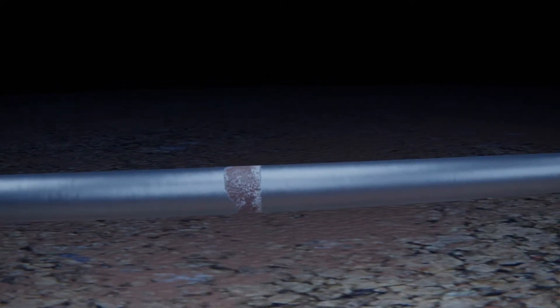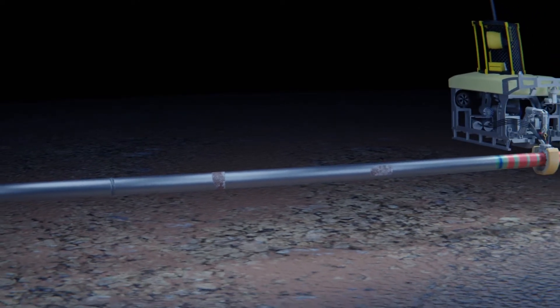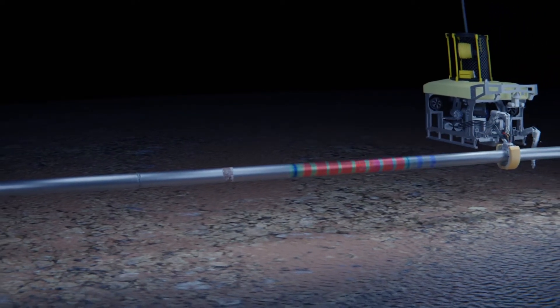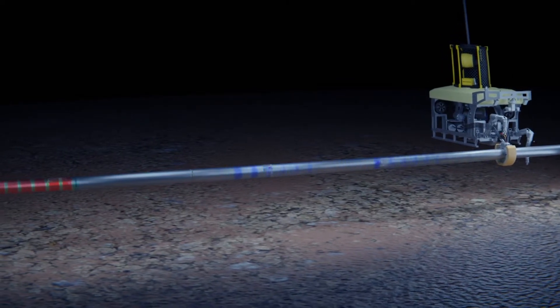VERN's clamp uses long-range ultrasonic testing to locate flaws up to 100 metres at either side of the inspection tool. This means it can accurately detect wall thickness loss on both internal and external surfaces over a 200 metres range from inspection points.